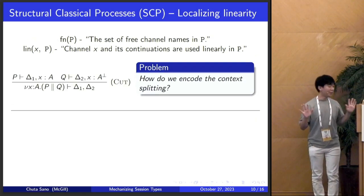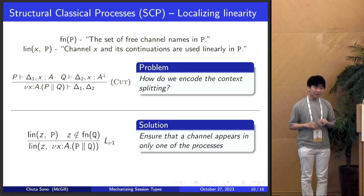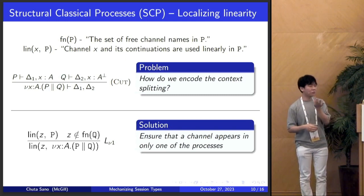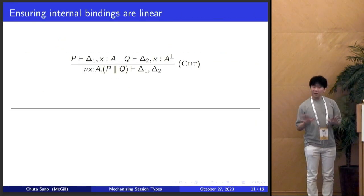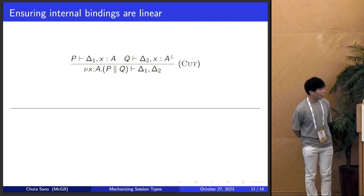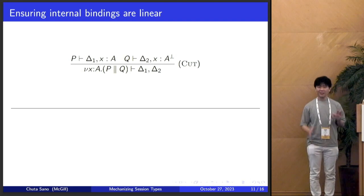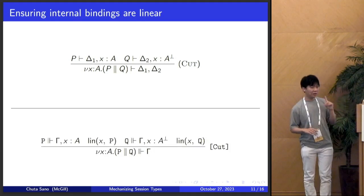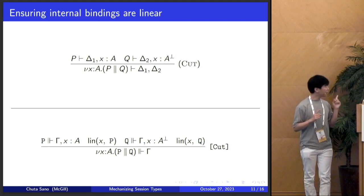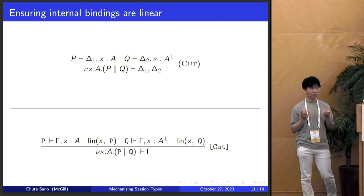For the context splitting problem, it's best to look at the linearity predicate from the perspective of one particular assumption z: if you have a composition of p and q, z will appear in p but not in q, or the other way around. Circling back to the close rule, how do we ensure all bounded assumptions satisfy the linearity predicate? We look at type rules that bind new assumptions — the cut rule. In CP the context is split; in SCP we keep the same gamma and add linearity predicates over p and q with the new binding x, ensuring every bound channel satisfies the linearity predicate.